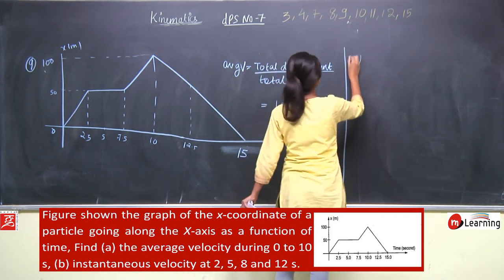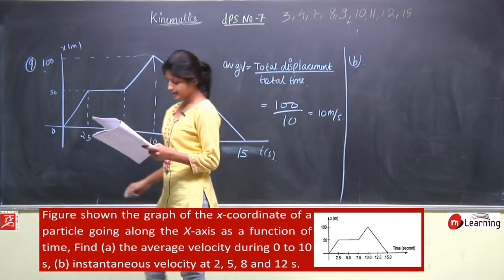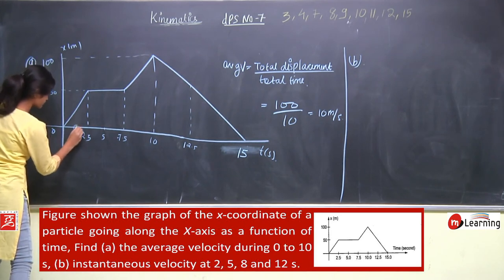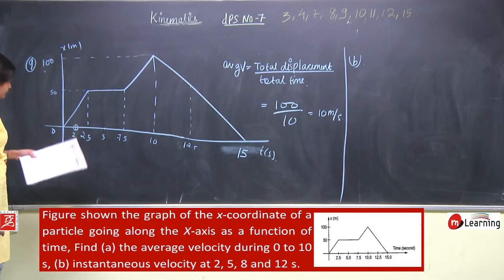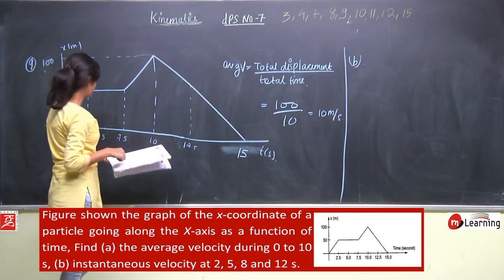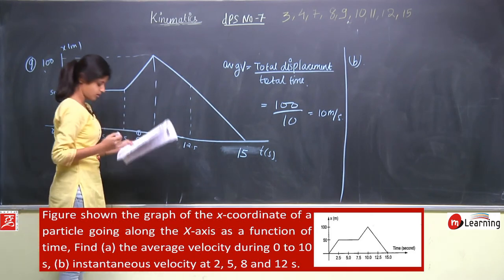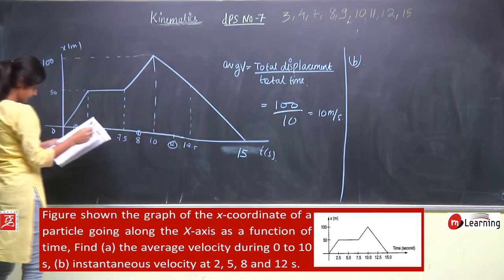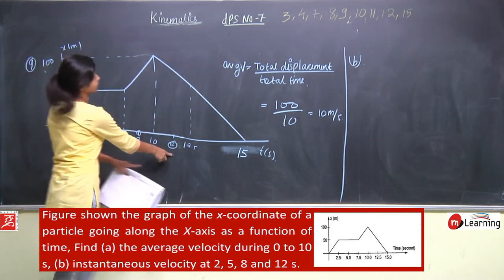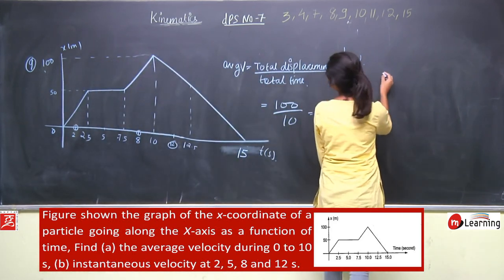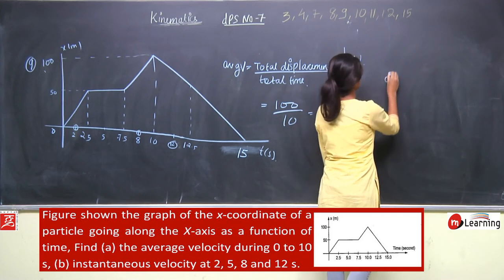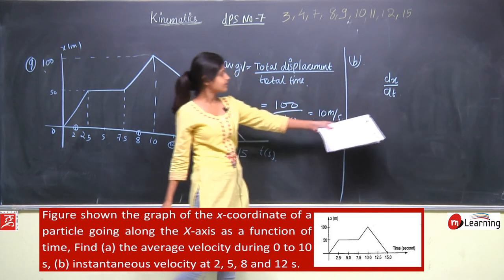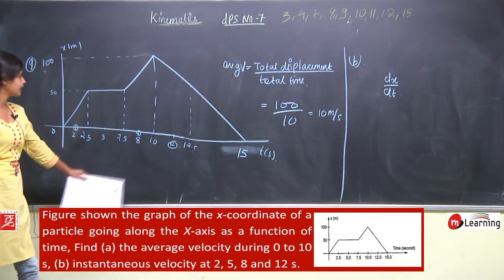Now part B — instantaneous velocity. Instantaneous velocity at t = 2 second — 2 second यहाँ कहीं आएगा। At t = 5 second, t = 8 second, और t = 12 second. Instantaneous velocity क्या हो जाएगी? dx by dt — इस position-time graph का slope है।